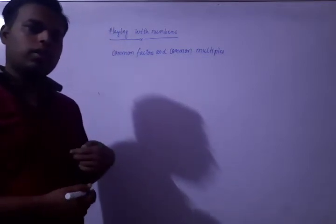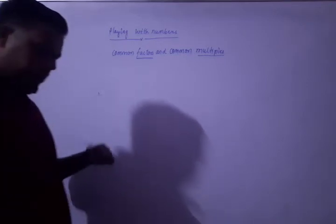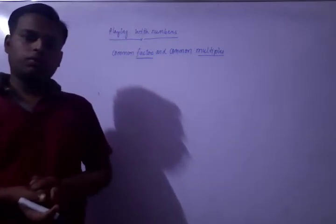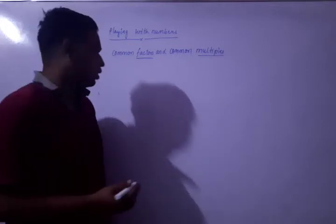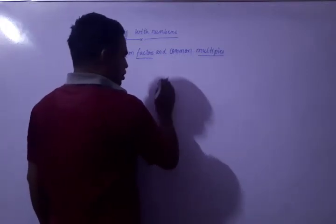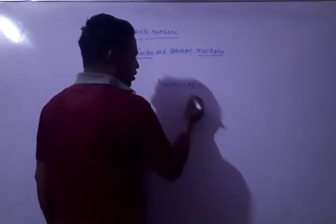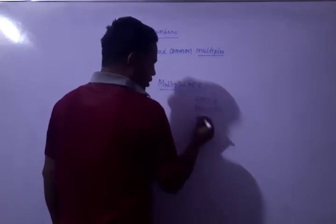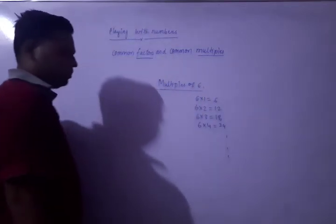Earlier, in our previous video lecture, we studied only about factors and multiples. Multiples will always be equal to or more than a given number. In multiples, what we do is multiply a given number by 1, 2, 3, 4, 5, 6, and so on. Suppose we have to write multiples of 6: 6×1=6, 6×2=12, 6×3=18, 6×4=24, and many more numbers will come.